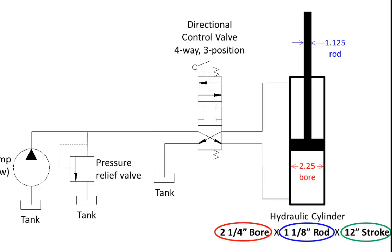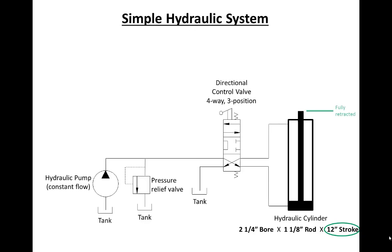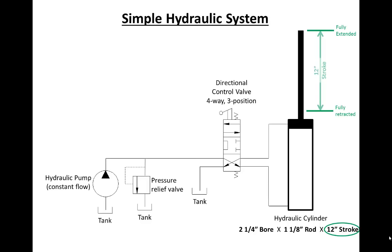For instance, let's retract this cylinder all the way to the bottom and make a mark at the end of the rod. As it extends, it will eventually reach the fully extended position. The distance between the fully retracted and the fully extended position is the stroke of the cylinder.